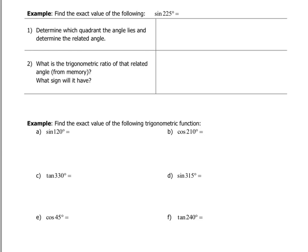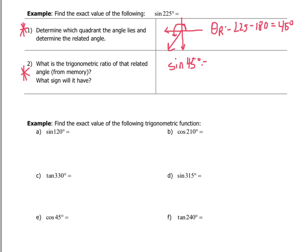In this next example, we're asked to find the exact value for sine 225. First, I'm going to determine the quadrant where the angle lies. 225 is an angle in the third quadrant, between 180 and 270. The reference angle is 225 minus 180 — 45 degrees. So I'm in the 45-degree family. What is the trigonometric ratio for that related angle from memory? We know that the sine of 45 degrees is root 2 over 2.